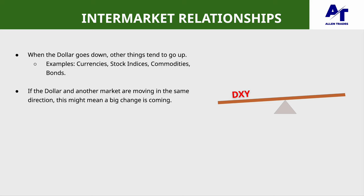So for example — currencies, stock indices, commodities, bonds — when the dollar is going up, all of those tend to go down. Now this doesn't mean it's always going to be like that; this is just how it generally is. So if the dollar and another market are moving in the same direction, then this might mean a big change is coming.